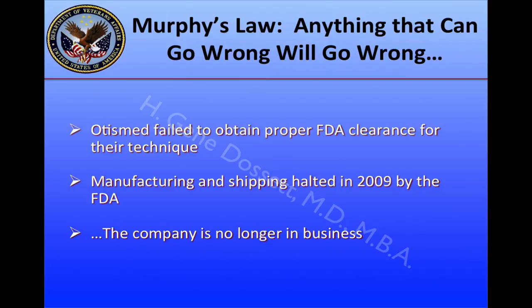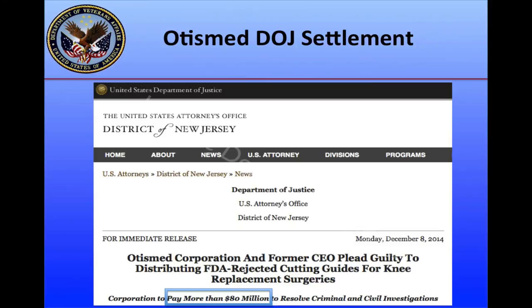What is the current state-of-the-art? At this point, I have to quote Murphy's Law: anything that can go wrong will go wrong. OtisMed failed to obtain proper FDA clearance for their technique. Manufacturing and shipping was halted in 2009 by the FDA, and the company is no longer in business. The CEO organized the shipping of about 200 guides after the cease and desist order from the FDA, leading to the U.S. Attorney's Office in New Jersey prosecuting both the company and the CEO. The corporation was required to pay more than $80 million in fines, and the CEO is facing up to three years in jail and a $300,000 fine.